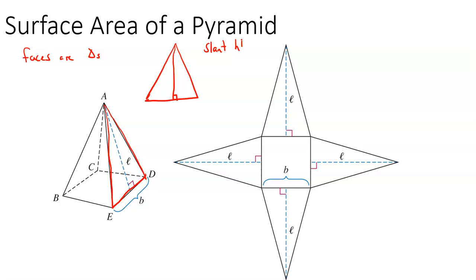We don't use H to abbreviate slant height because H is the actual height of the pyramid — that thing that comes down the middle. Instead, we use L for slant height. The slant height is the distance from the vertex to the middle of one of the sides, going perpendicular down the face of the pyramid.